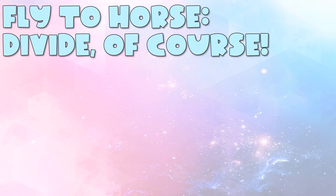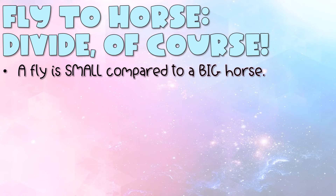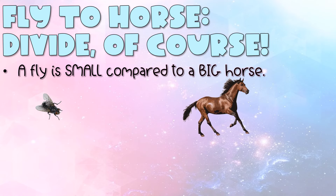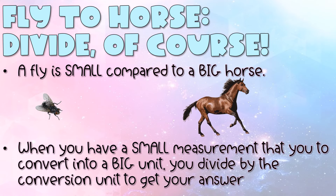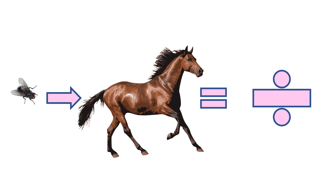When you're trying to go from small to large units, use a different memory device: 'fly to horse, divide of course.' A fly is small compared to a big horse — so small to big means we go the opposite way. When you have a small measurement to convert to a big unit, you divide by the conversion unit to get your answer.